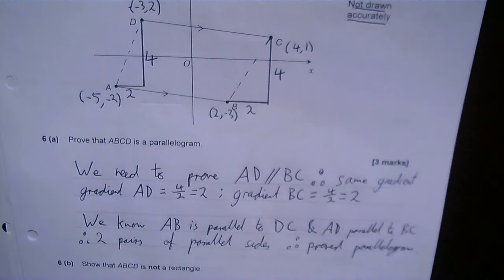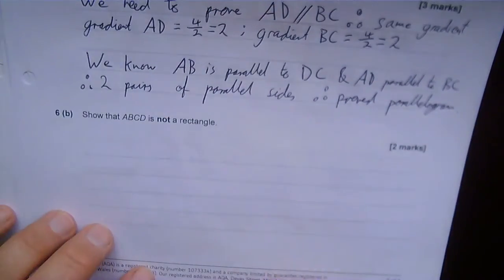Right. That just leaves us with 6B. Show that ABCD is not a rectangle.